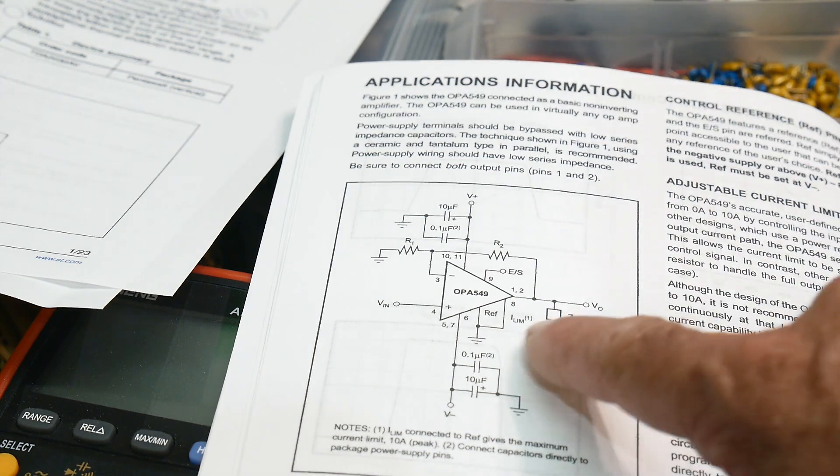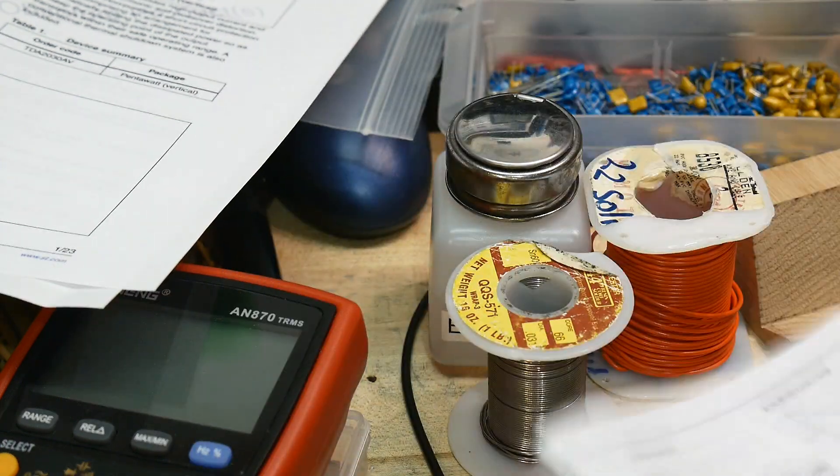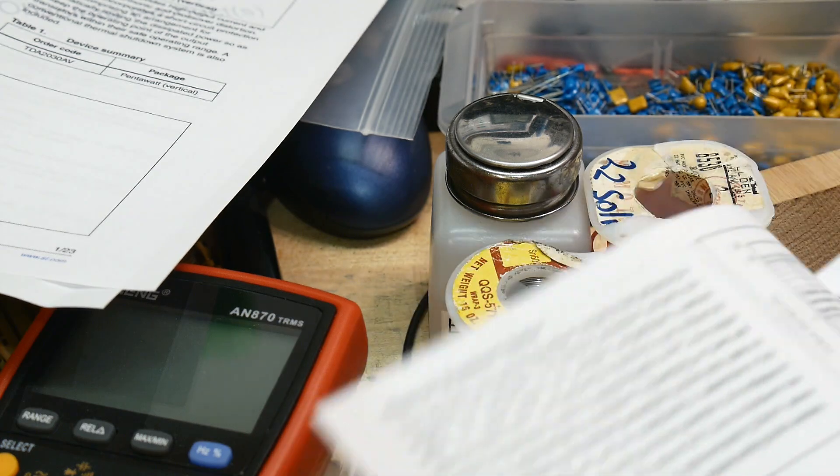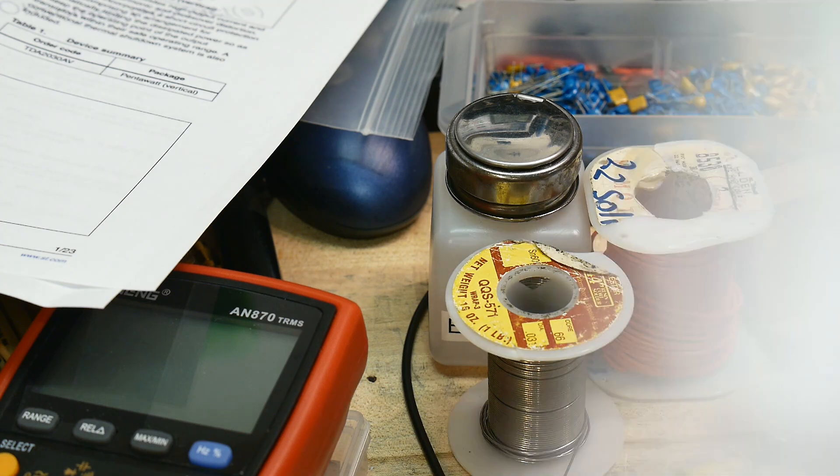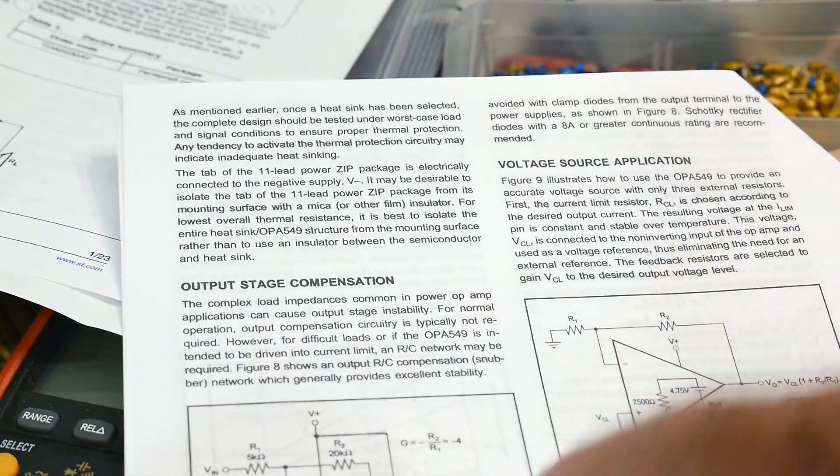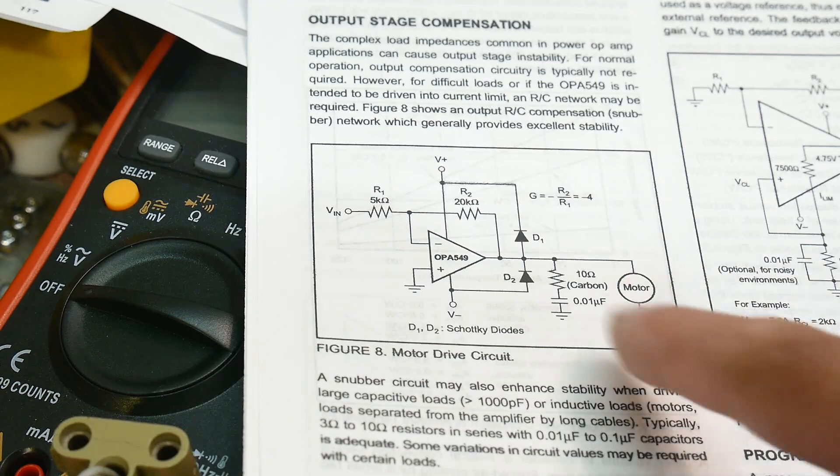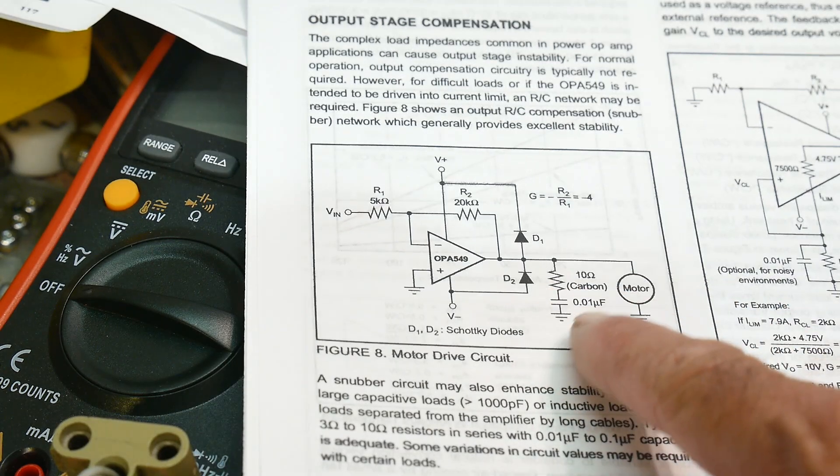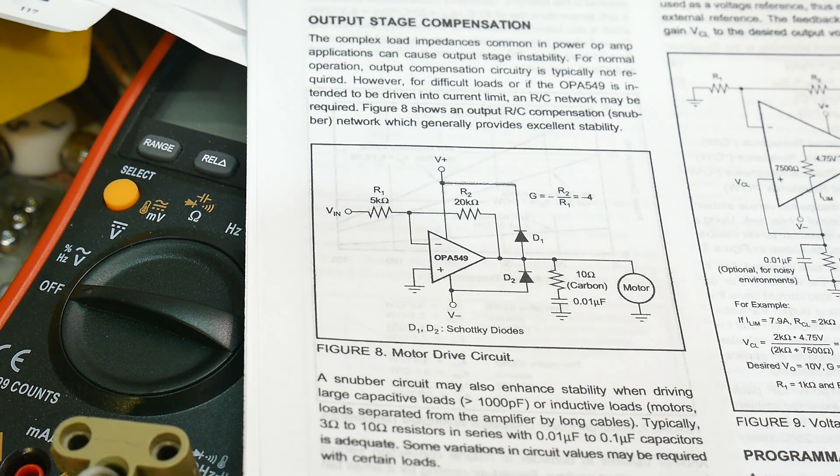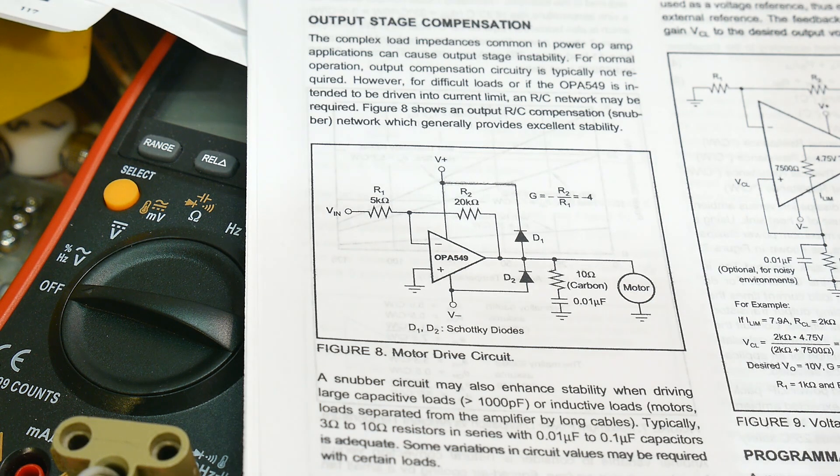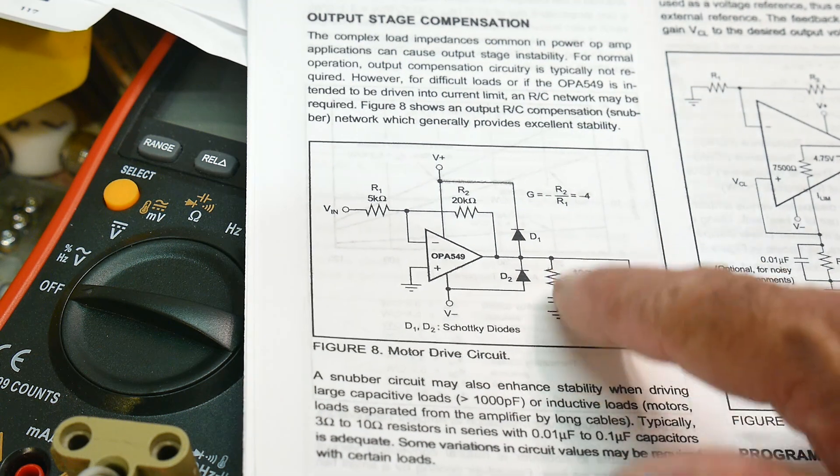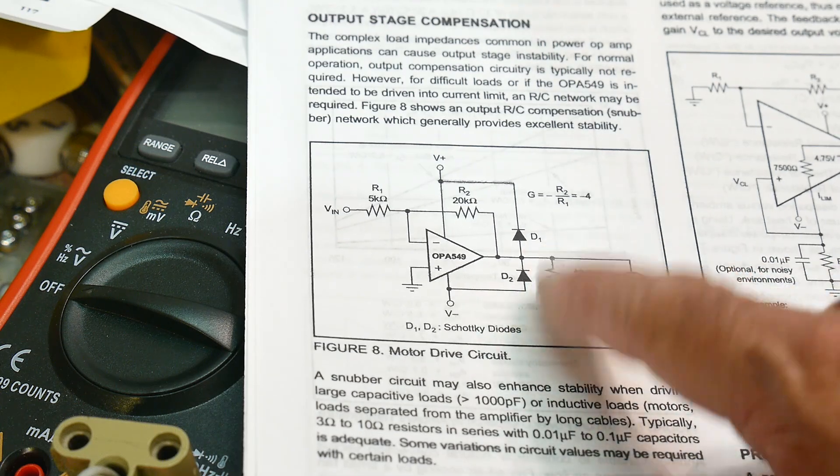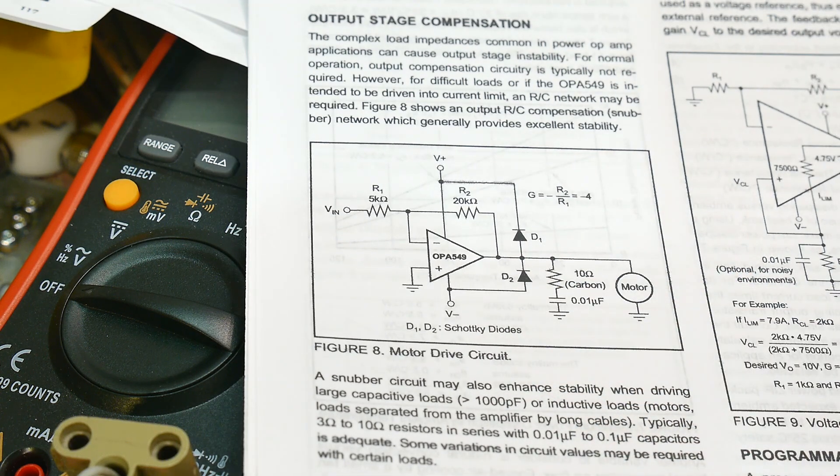But they basically say, do this. Let me find the picture. Okay. So they basically say, do this, put a 10 ohm resistor and a 0.01 microfarad capacitor in there and things will be better. And then if you're worried about it having back EMF on motors and stuff, put in some protection diodes. Okay, fine. But, this is the trick. The 10 ohms and the 0.01 microfarad is the trick.